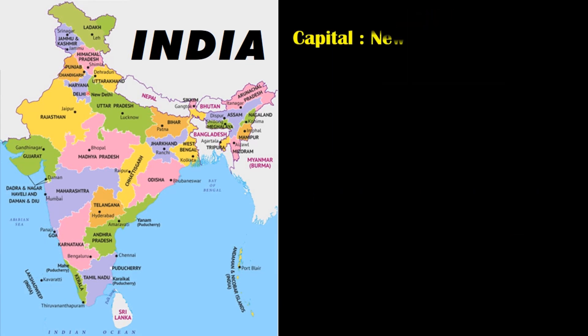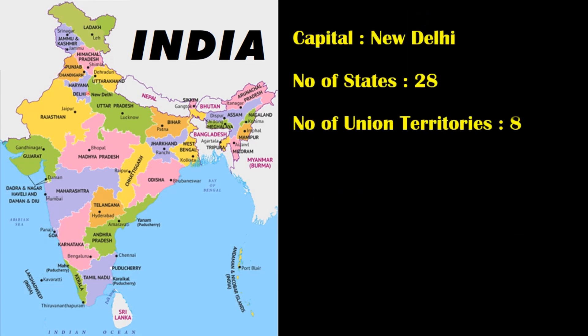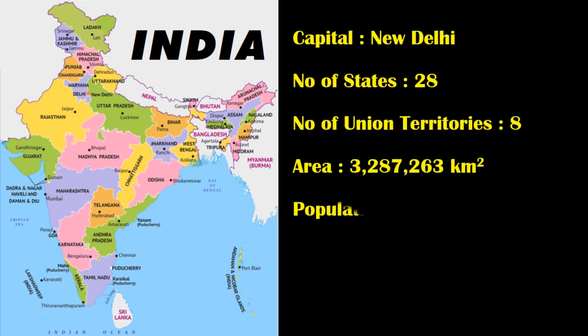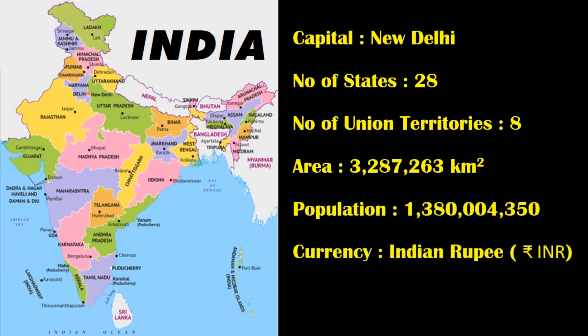India: capital New Delhi, number of states 28, number of union territories 8, population 1.38 billion, currency Indian rupee.